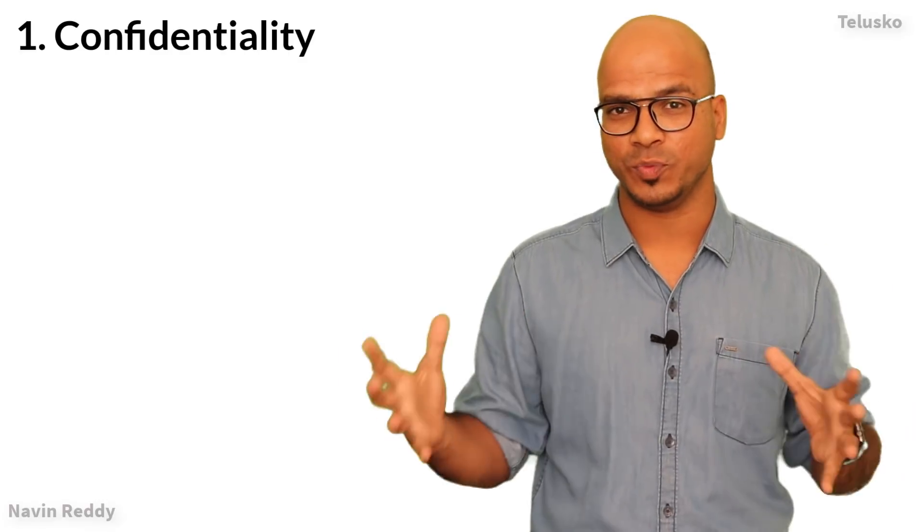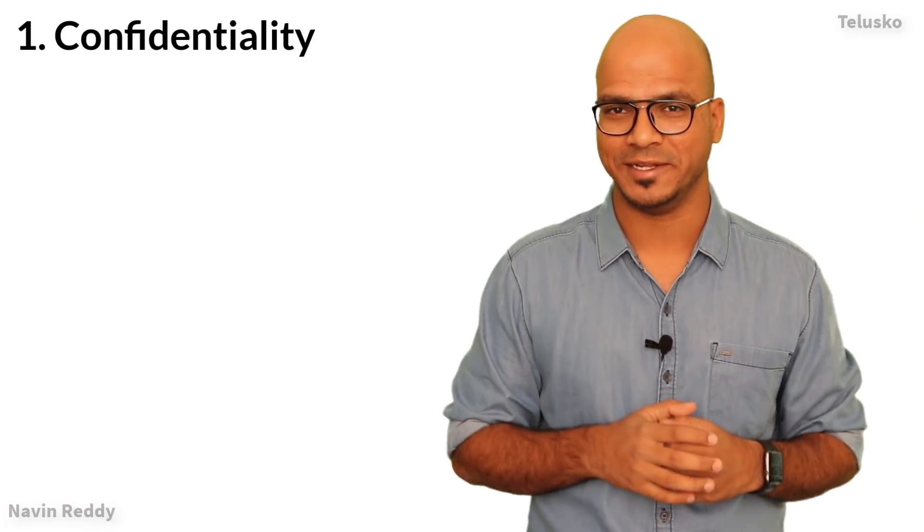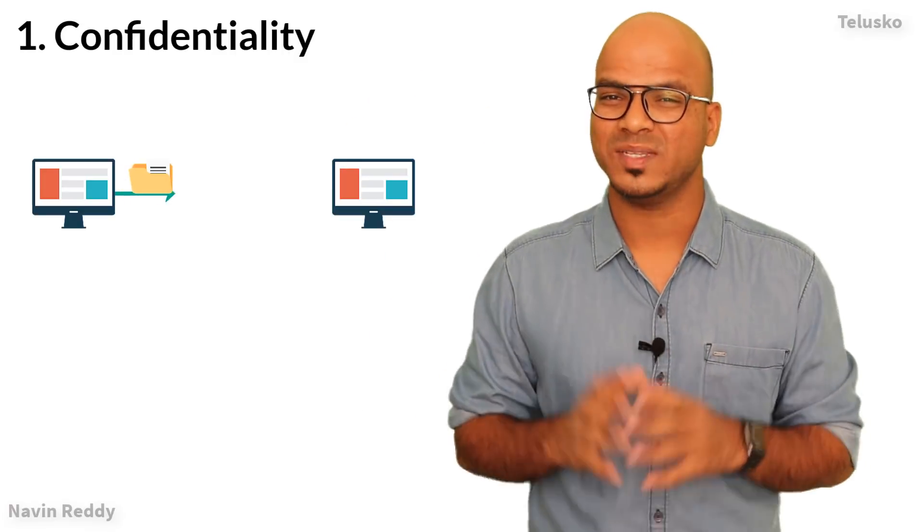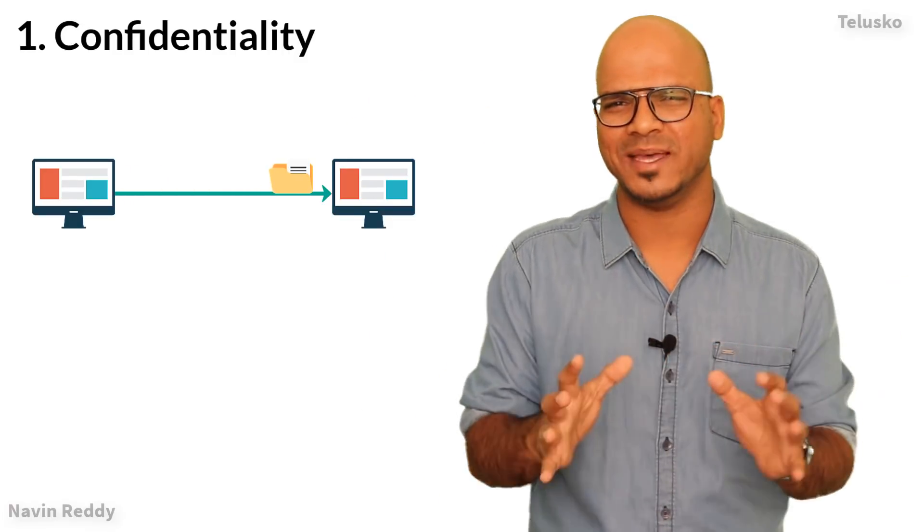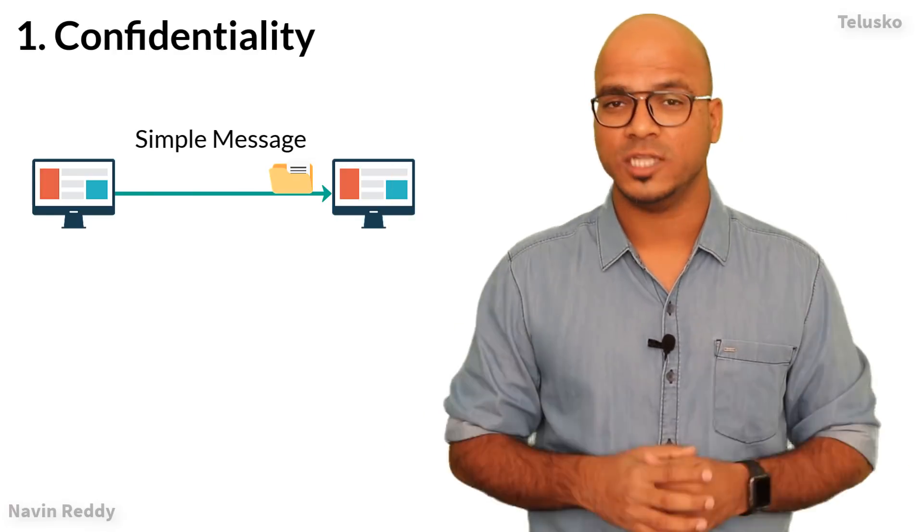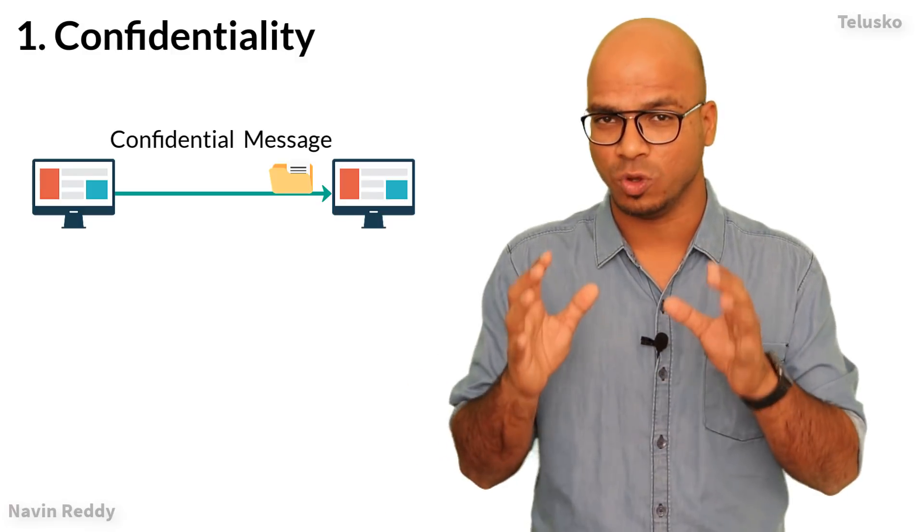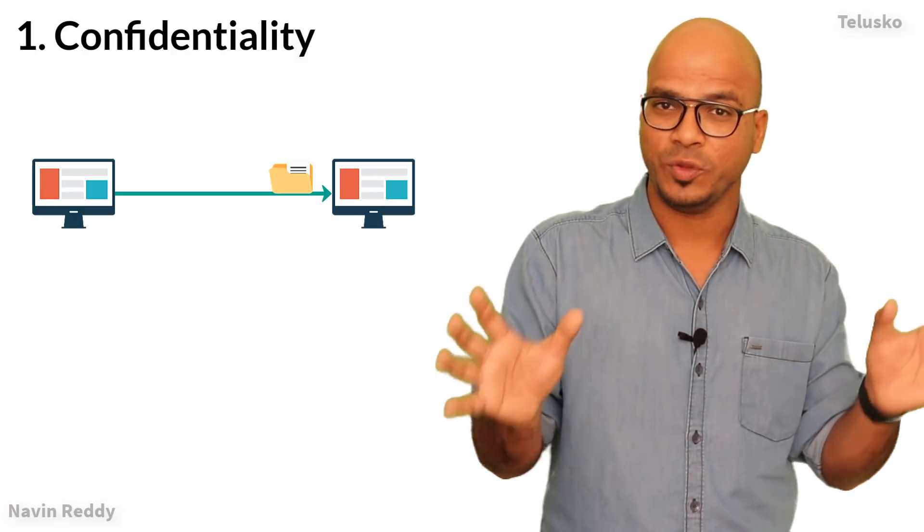Let's say you're working on this peer-to-peer network and you have A and B. Let's say A wants to send a message to B. Now this message can be anything - it can be a simple message like 'hi hello' or it can be very confidential, let's say your bank details.